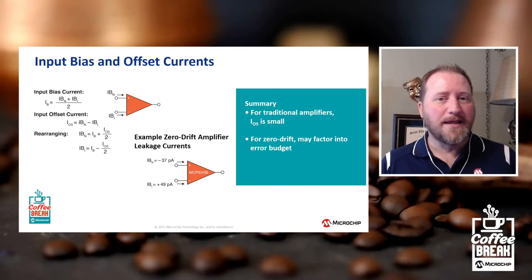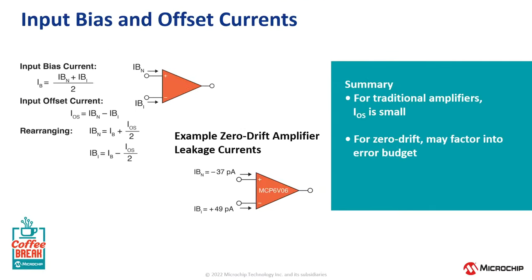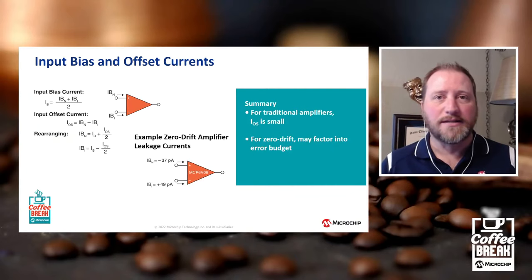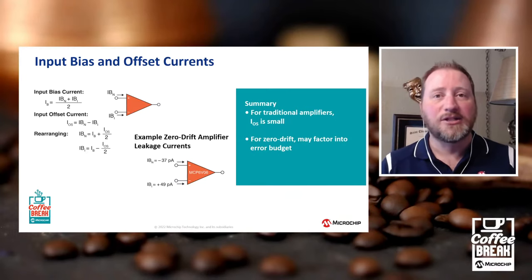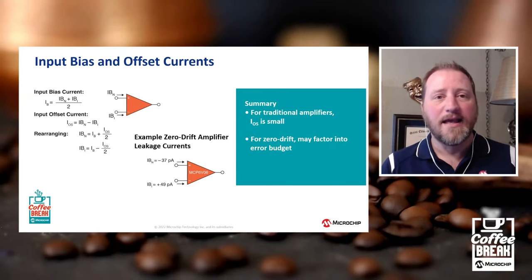For a zero drift amplifier, that might not be the case. What we're showing here is the MCP6V06, a zero drift amplifier, and you can see the two currents flowing in and out of the input pins. If you take the average of the two — which is the definition of bias current — it's pretty small, around six picoamps. However, if you look at the difference, which is the offset current, it can be significant and could affect your overall error budget. This is because of the zero drift architecture itself — the chopping switches connected to the input pins enable additional leakage paths for input current, which is why you'll see higher offset currents and possibly higher bias currents for a zero drift amplifier.